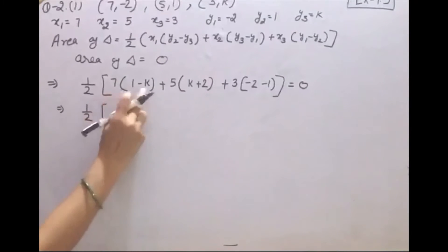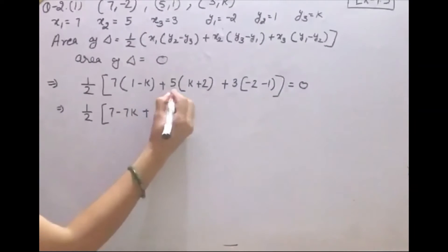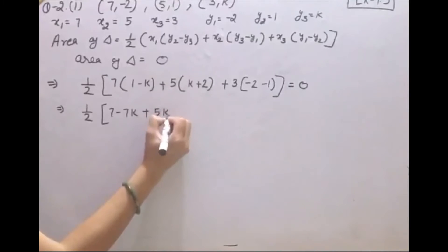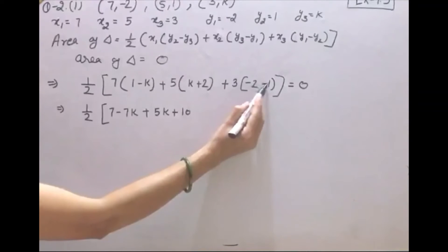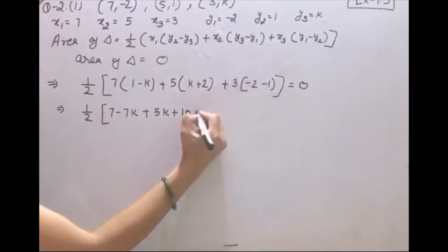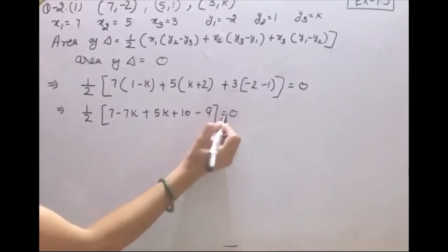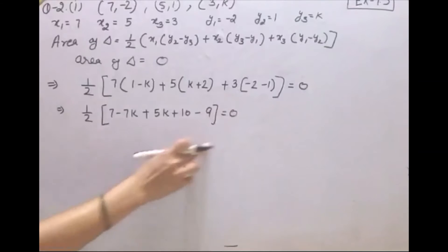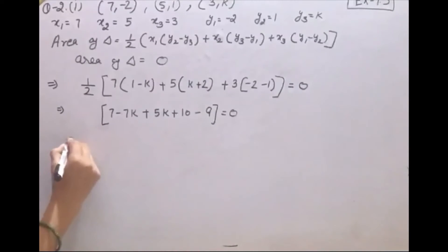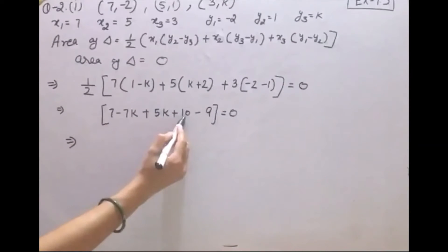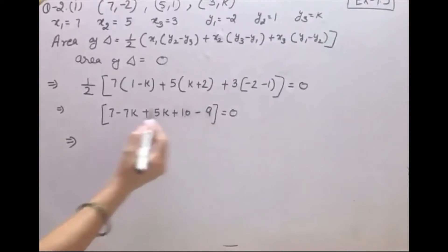Multiply करेंगे: seven × (1 − k) + five × (k + 2) + three × (−2 − (−1)) = 0। Expanding: 7 − 7k + 5k + 10 + three × (−2 + 1) = 0। तो 7 − 7k + 5k + 10 + three × (−1) = 0। Seven plus nine is seventeen और terms collect करेंगे।